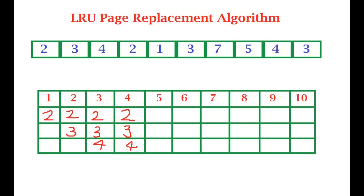Now if this were FCFS and one comes in, two would have been removed first because it is the oldest element in memory. On the other hand, in Least Recently Used, we remove three, because that is the oldest used page — before this, two was used. So we write two, three, four, cancel three, and write one here.